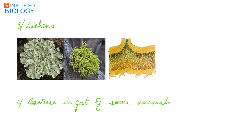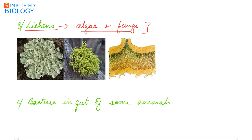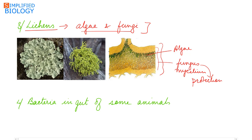The next example is lichens — a symbiotic association between algae and fungi. The fungus usually belongs to class Ascomycetes, while the algae is either green algae or blue-green algae. It is a close association where they cannot live separately. Inside the thallus, the main part is occupied by the fungal mycelium, and the algae is also present.